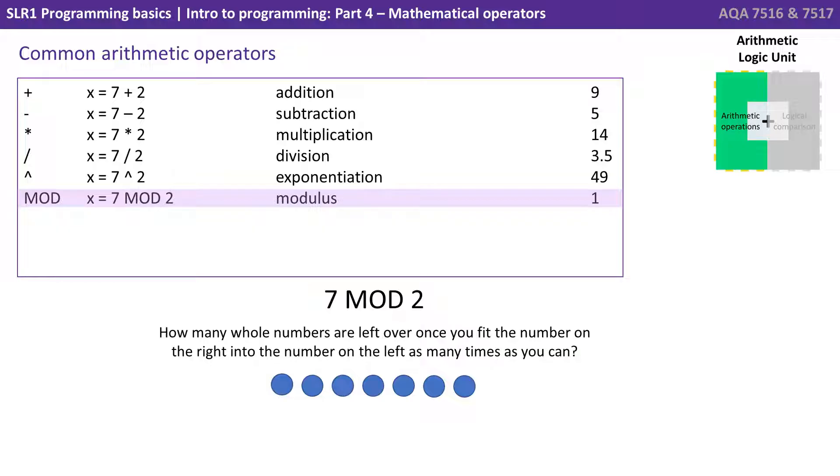Next we have modulus. Now this one's worth talking about. So what is x equals 7 mod 2? It's how many whole numbers are left over once you fit the number on the right into the number on the left as many times as you can.